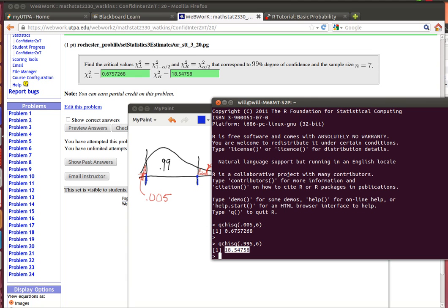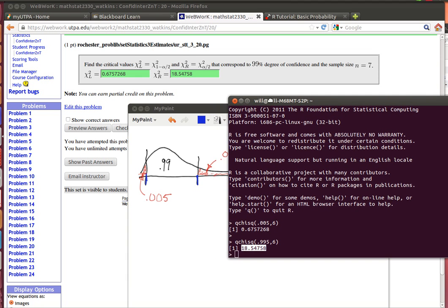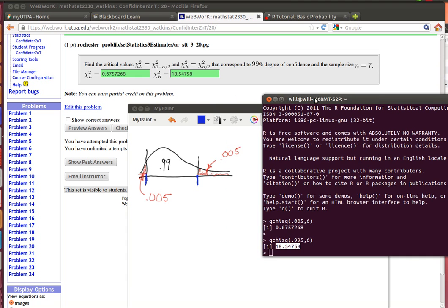On the other hand, when we're looking for this so that 0.005 is above this value, when we're looking for this quantile, then this part down below here will be 0.995. That total area down below here is 0.995. So we're just looking for the chi-squared of 0.995 with 6. And that's it.